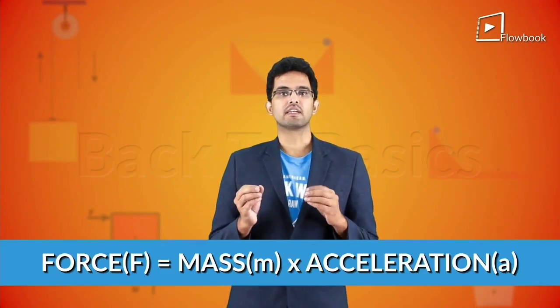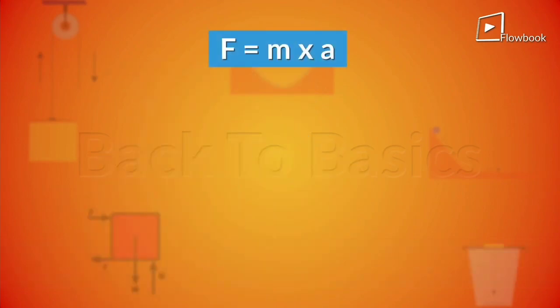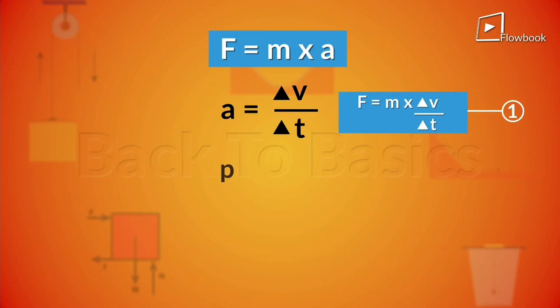From Newton's second law of motion, we know that the force is a product of mass and acceleration. F is equal to mass into acceleration, where acceleration can also be written as the change in velocity per unit of time. We also know that momentum is nothing but the product of mass into velocity.